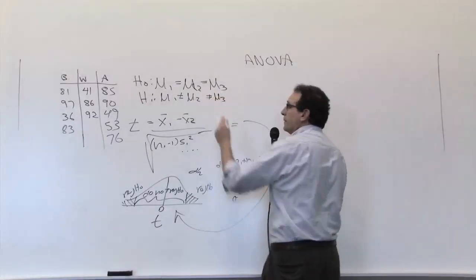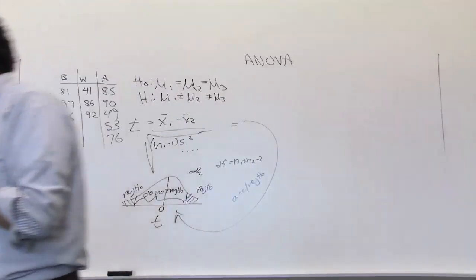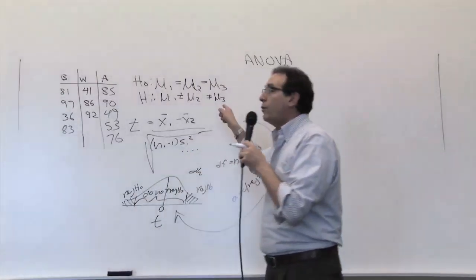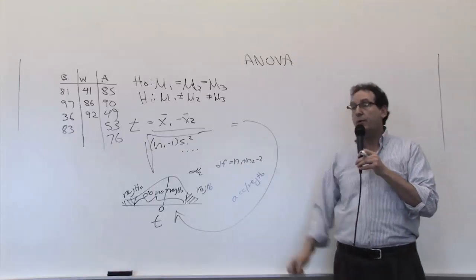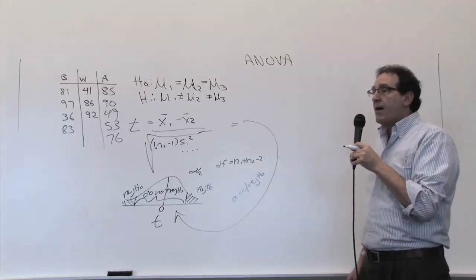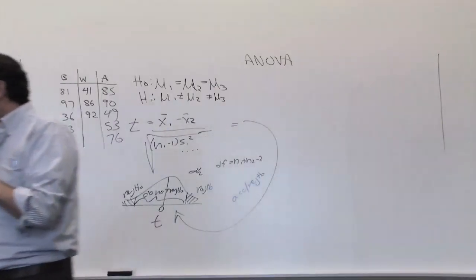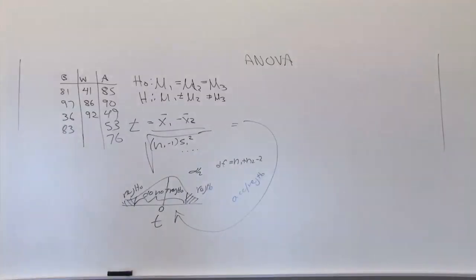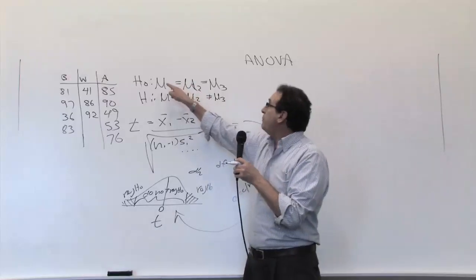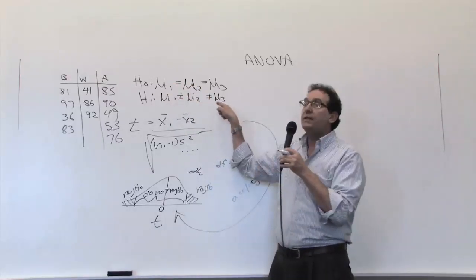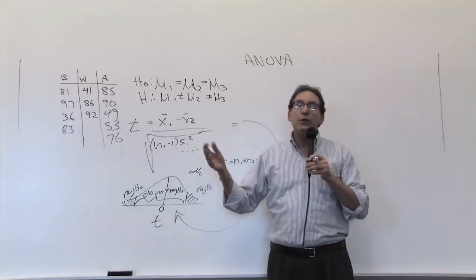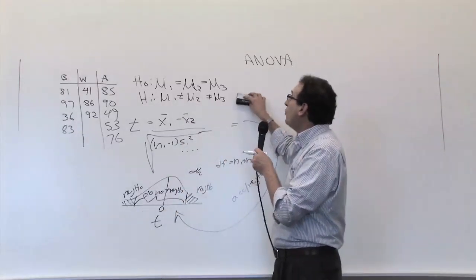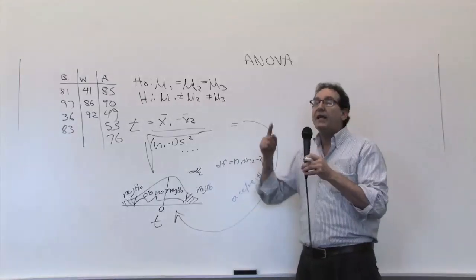A lot of people have put down 'not equal to mu3' for H1. That turns out to be wrong. The obvious answer, but it's wrong. Why is it wrong? Because remember, H1 is the opposite of H0. How would you prove H0 is wrong? If mu1 and mu2 are both the same but mu3 is different, that disproves H0. As long as there's one difference anywhere along the line, you reject H0. So remember: the opposite of saying they're all the same is not saying they're all different, but saying at least one of them is different.